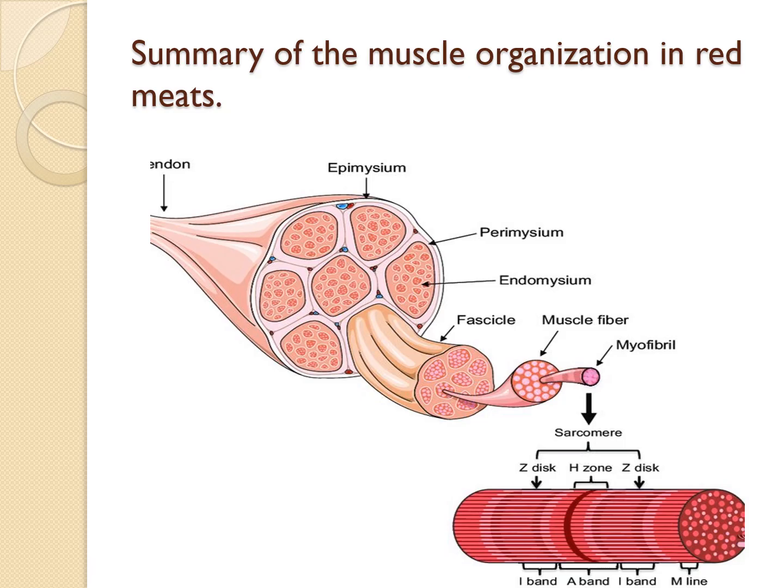Then myofibrils, which are made up of sarcomeres and myofilaments. Then fibers, which are made up of myofibrils and sarcoplasm, also bundles of fibers and muscle. The binding components were the sarcolemma, endomysium which is between the fibers, sarcolemma which encases the fiber, perimysium which surrounds the bundle of fibers, and epimysium which surrounds many bundles of fibers to encase a muscle.